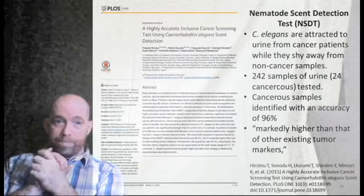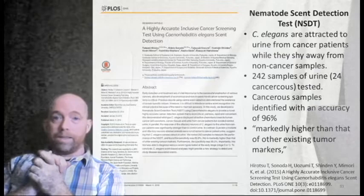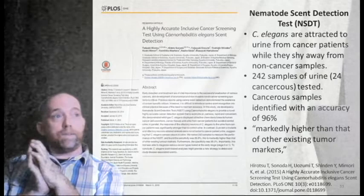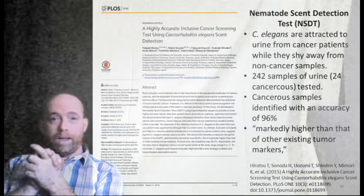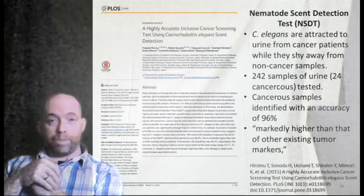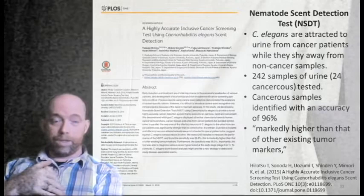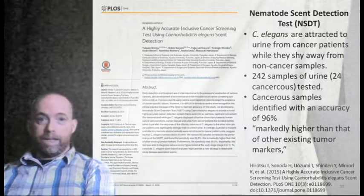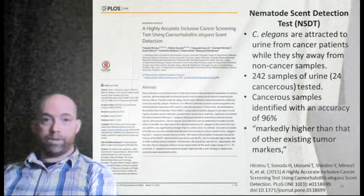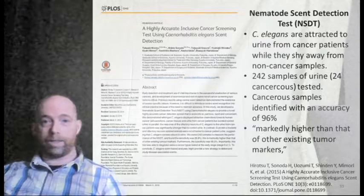One neat application of this incredibly diverse phylum involves C. elegans — the workhorse of developmental and evolutionary biology. Free-living nematodes have recently been found to be attracted to urine from cancer patients while shying away from urine from non-cancerous patients. This surprising result suggests a novel, potentially simple field-based technology to test for cancer even away from infrastructure and electricity.